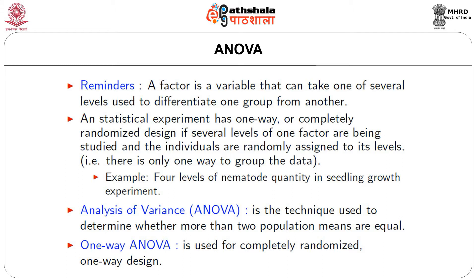A factor is a variable that can take one of several levels, used to differentiate one group from another. A statistical experiment has one-way or completely randomized design if several levels of one factor are being studied and the individuals are randomly assigned to its level — that is, there is only one way to group the data. Example: 4 levels of nematode quantity in a seedling growth experiment. ANOVA is the technique used to determine whether more than two population means are equal. One-way ANOVA is used for completely randomized one-way design.